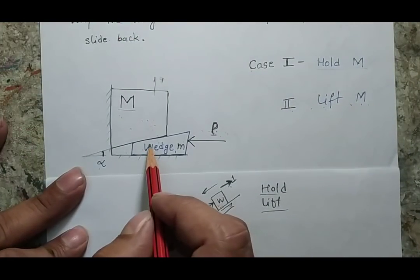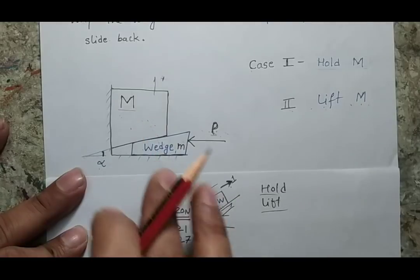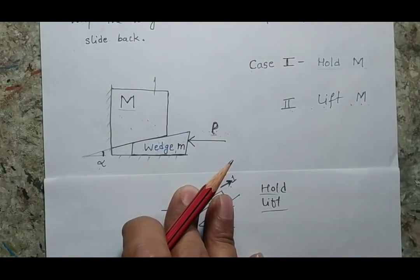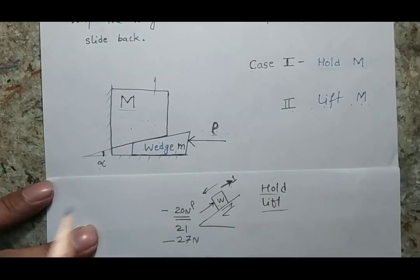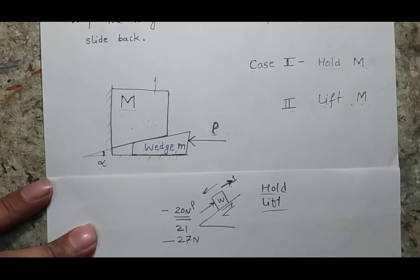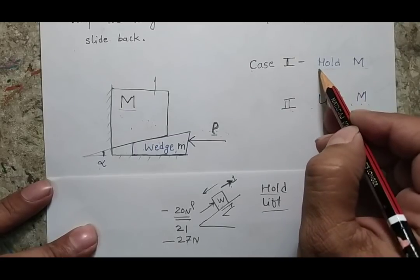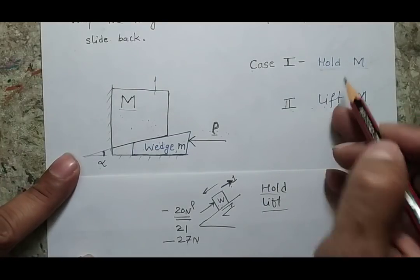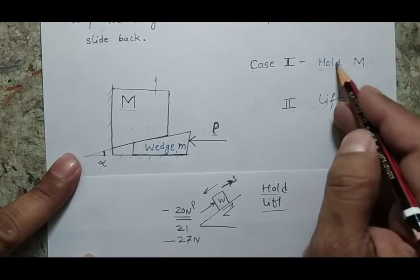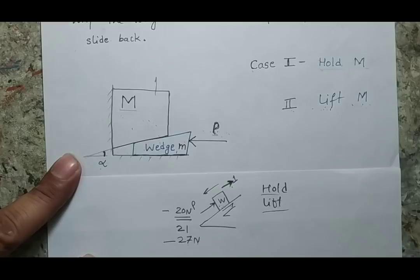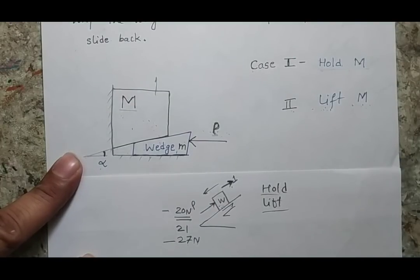Similarly, when we are inserting a wedge below a body and talking about the instantaneous condition where we apply a force P and the system is in equilibrium, we have to understand what condition we are talking about — whether it is the holding state or the lifting state — because these are two different states where the direction of friction will be different. Let's start with the lifting case.